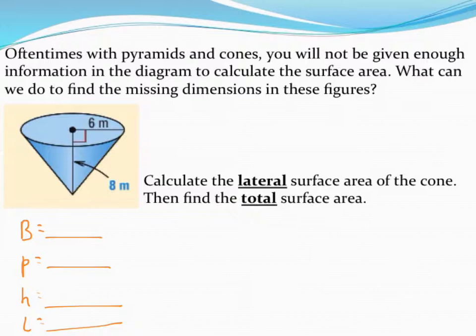So I've gone ahead and already written down the four things I need to find: B, P, H, and L. B is the area of the base, P is the perimeter of the base, H is the height of the pyramid or cone, and then L is the slant height.